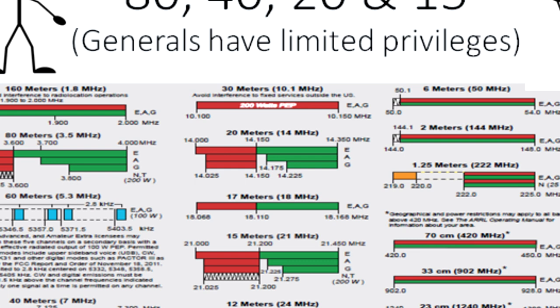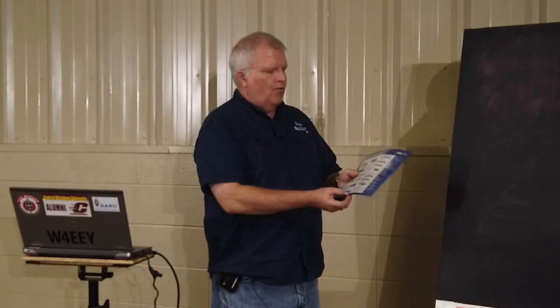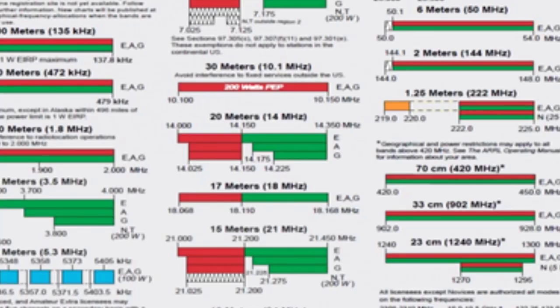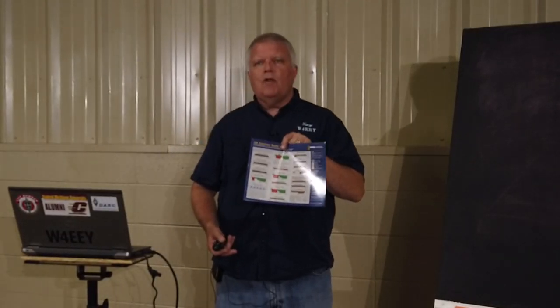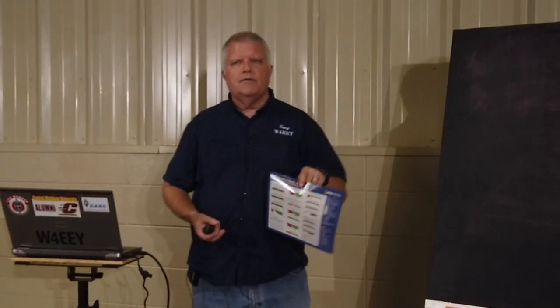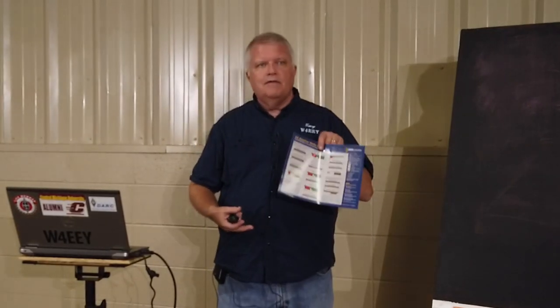Let's take a look at 20 meters, right in the middle of the chart. If you notice over on the right-hand side of 20 meters, there are the letters E, A, and G. E stands for extra class, A stands for advanced class, and G stands for general class. When you get your general class license, you are restricted to the smaller portion indicated by the green for the phone portion or the red for the CW portion. There aren't any advanced class licenses being issued anymore — but there still are advanced class operators who can renew their license every 10 years.